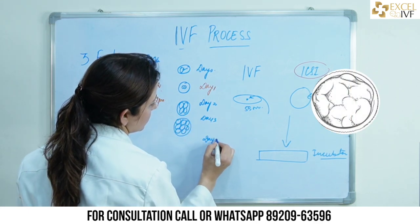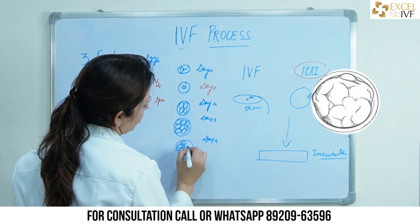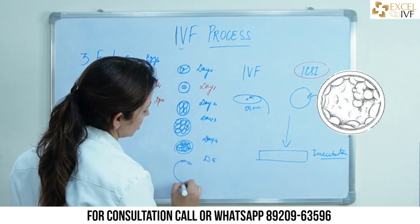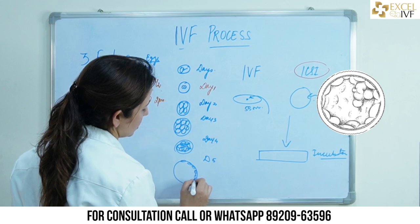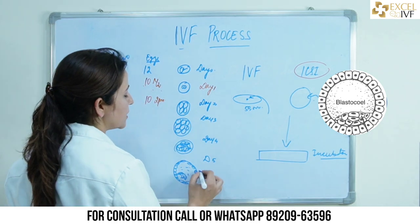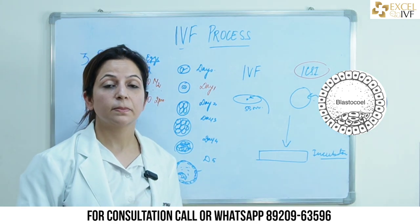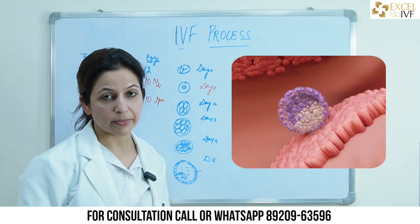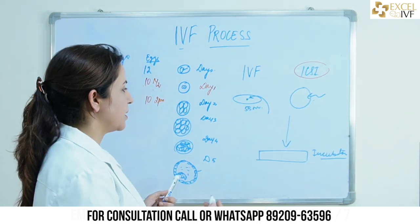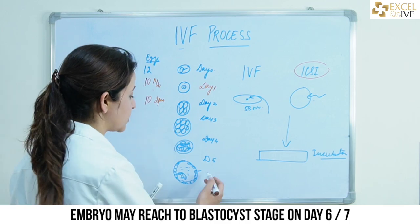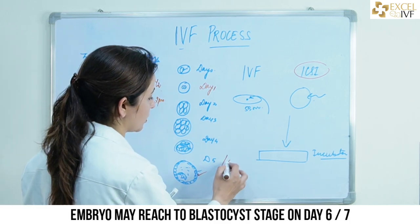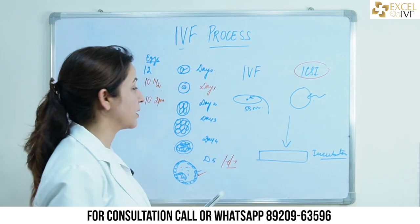Day four is the compaction stage where all the cells fuse together. Day five is the blastocyst stage, where the embryo rearranges into an outer cell layer, inner cell layer, and fluid — the stage at which the embryo would implant in the uterine lining for pregnancy to happen. Sometimes embryos are slow-growing and may reach blastocyst stage on day six or day seven; these are called slow-growing embryos.